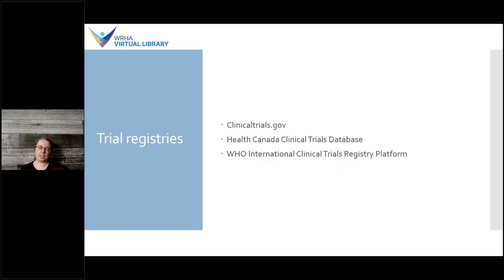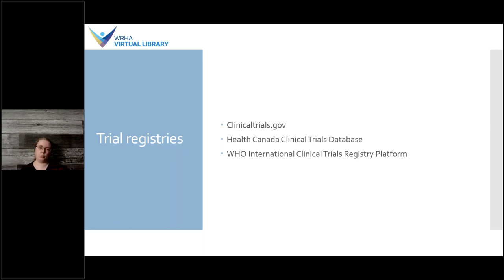If you're interested in trial registries, there are a number of different registry platforms to consider. ClinicalTrials.gov is run by the US government but contains trials from many locations around the world. Health Canada has Canadian trials, and the WHO ICTRP also has trials from around the world. These registries tend to include planned, current, and past trials — often including a link to the publication — and can also make you aware of trials that are recruiting or ongoing that may have interim results or information about their approach.